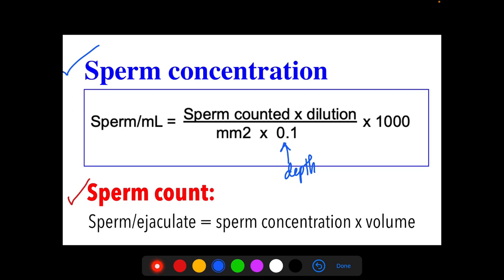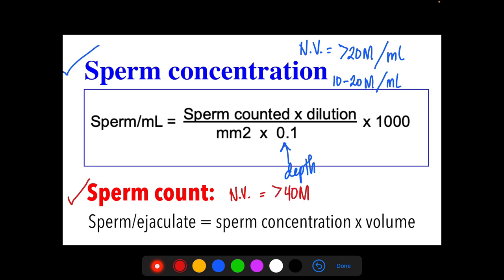The normal sperm concentration value is greater than 20 million sperm per mL; borderline value is 10 to 20 million per mL. The normal sperm count is greater than 40 million sperms per ejaculate. This is derived from: normal concentration of 20 million/mL multiplied by normal semen volume of 2 mL gives 40 million. As a shortcut for sperm concentration: if using 5 RBC squares, multiply sperms counted by 1,000,000; if using 2 large WBC squares, multiply by 100,000.